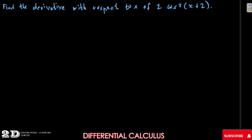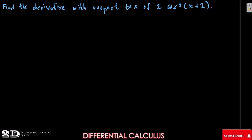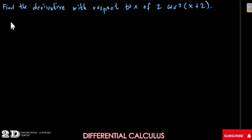Okay, another example: find the derivative with respect to x of the function 2 cosine squared of x plus 2. So we have here our solution.